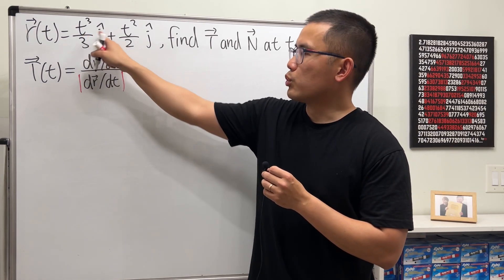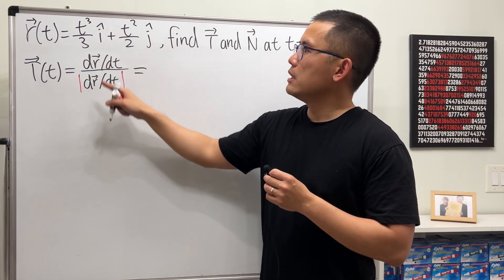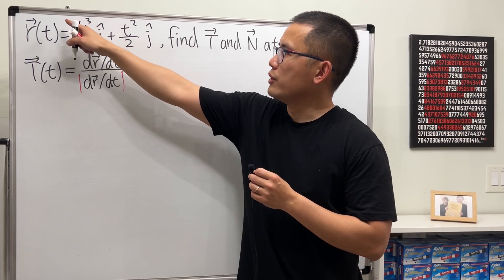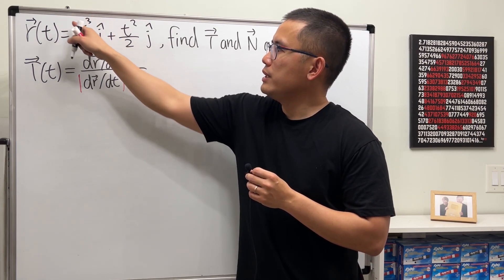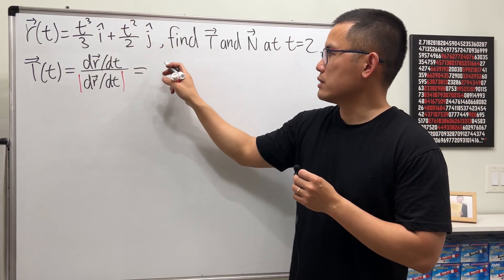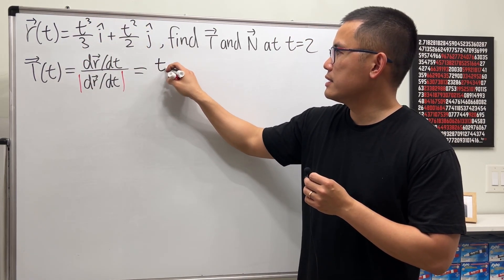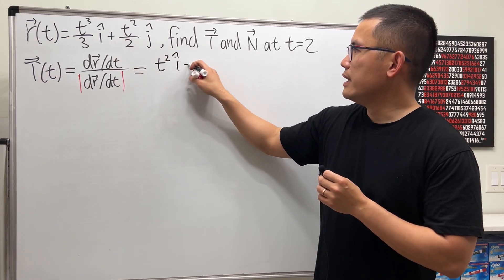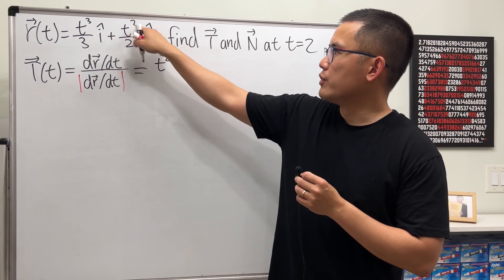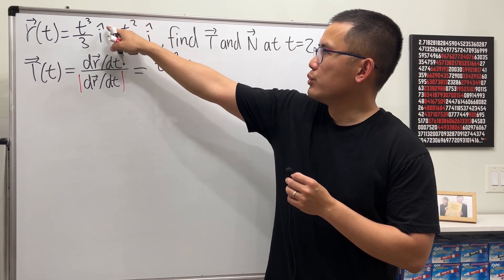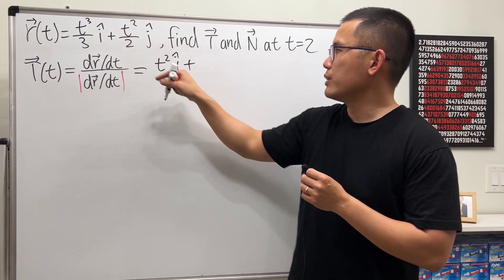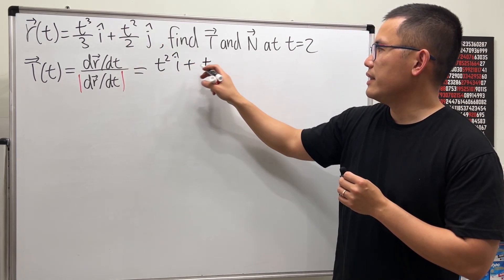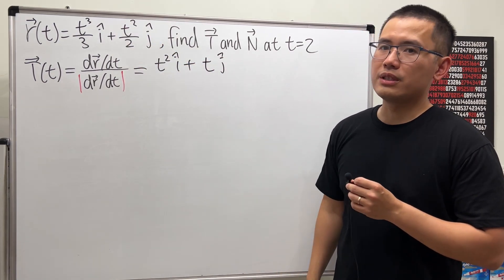So take the derivative. Take the derivative of t to the third power: bring the 3 to the front, 3 and 3 cancel, minus 1, so we get t squared — that's the i component. Then the derivative of the next term: put a 2 to the front and minus 1, 2 and 2 cancel, so it's just t, and that's the j component.